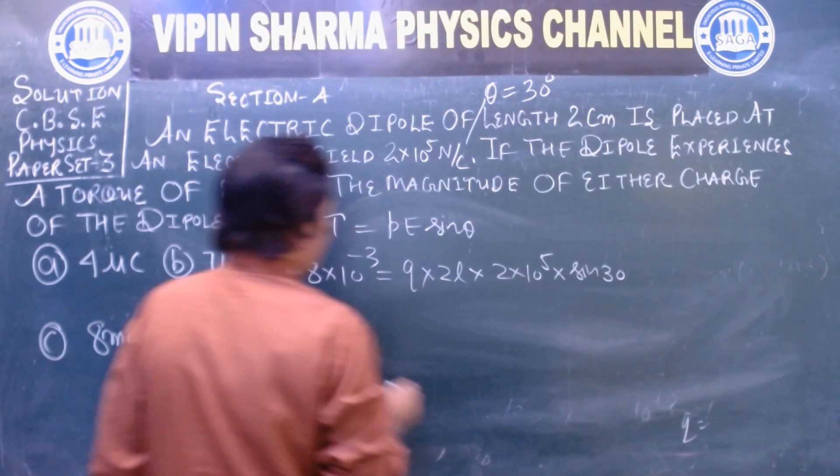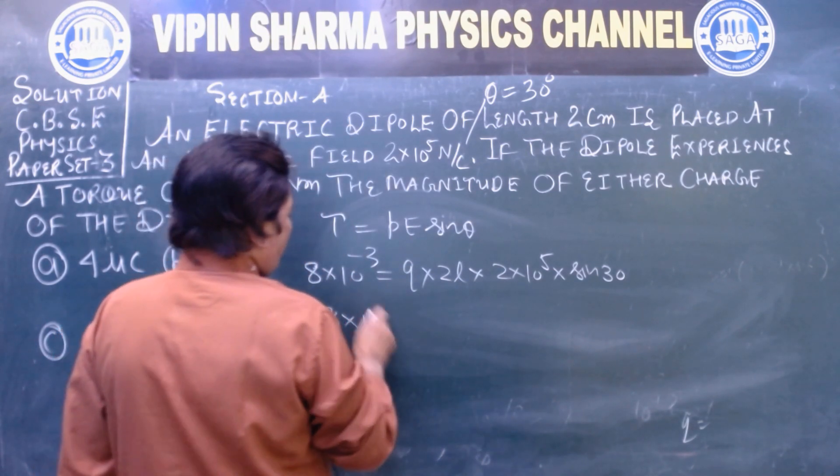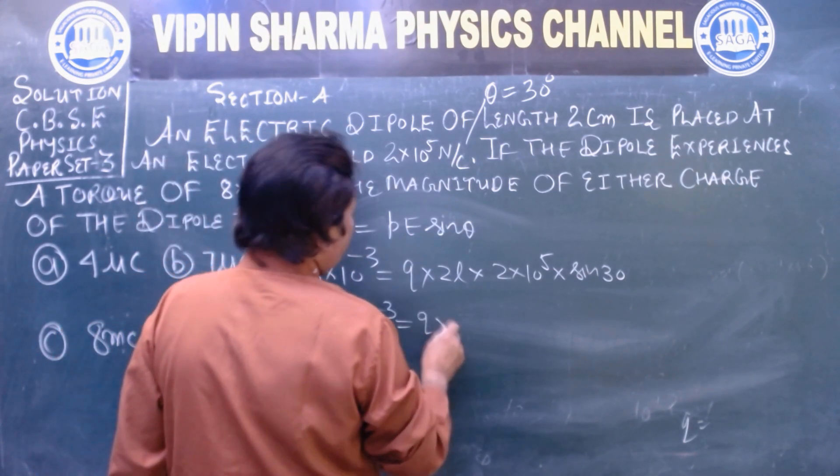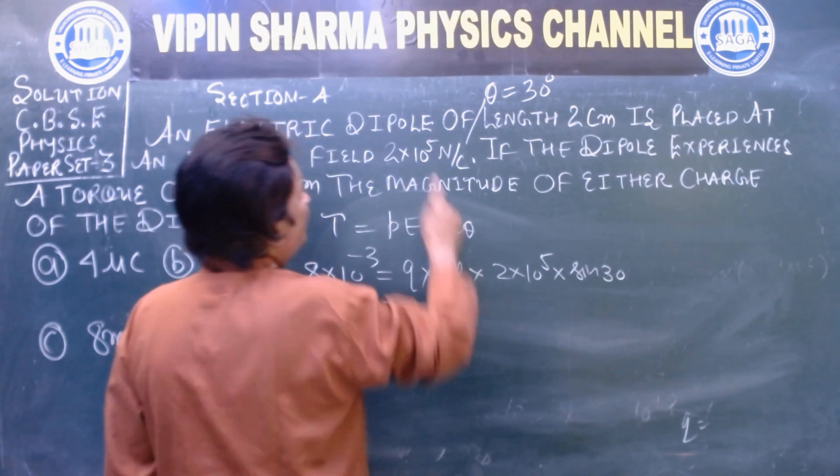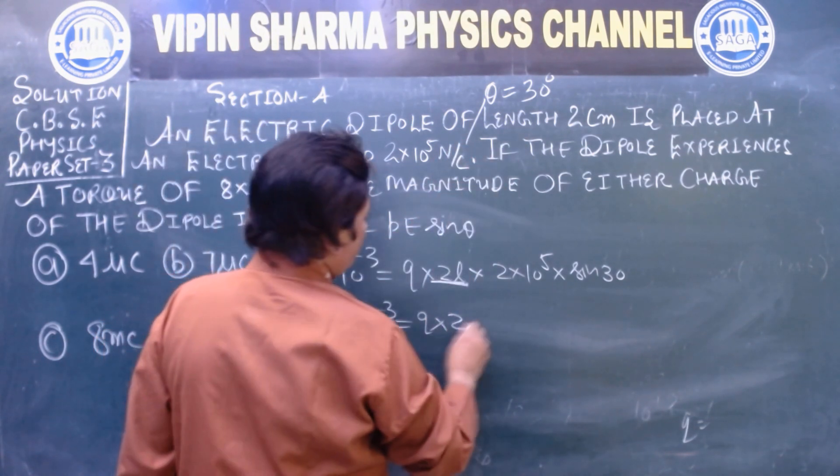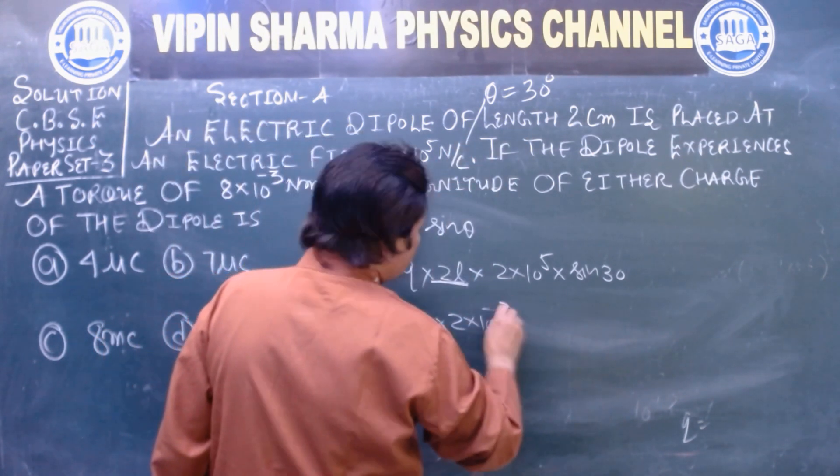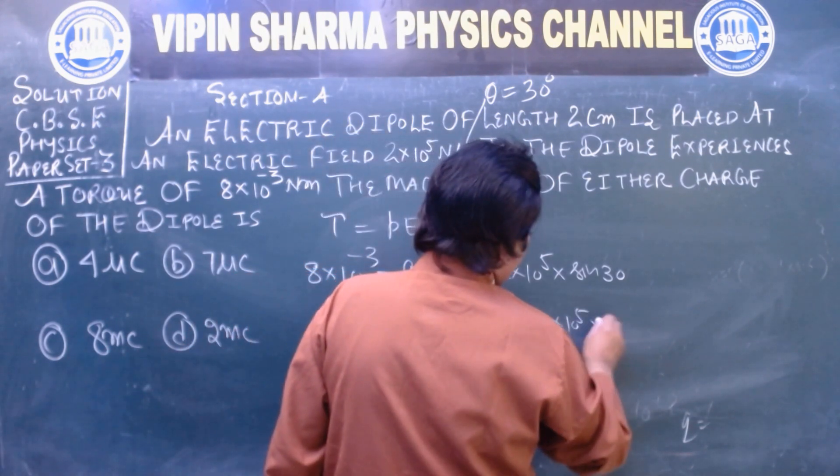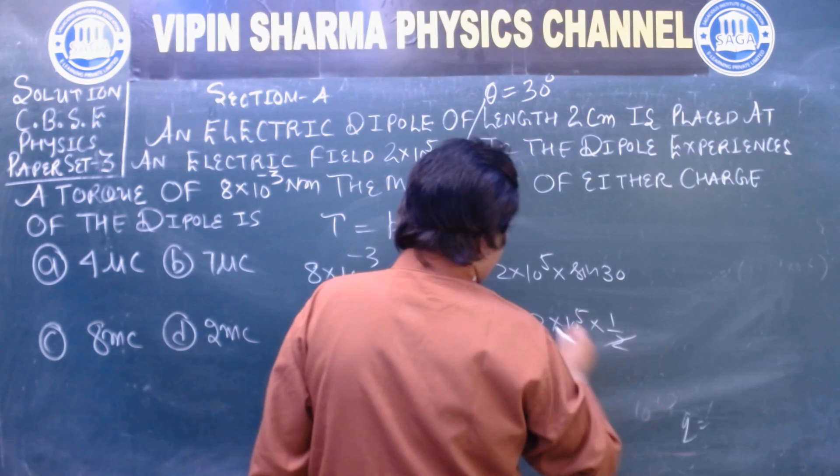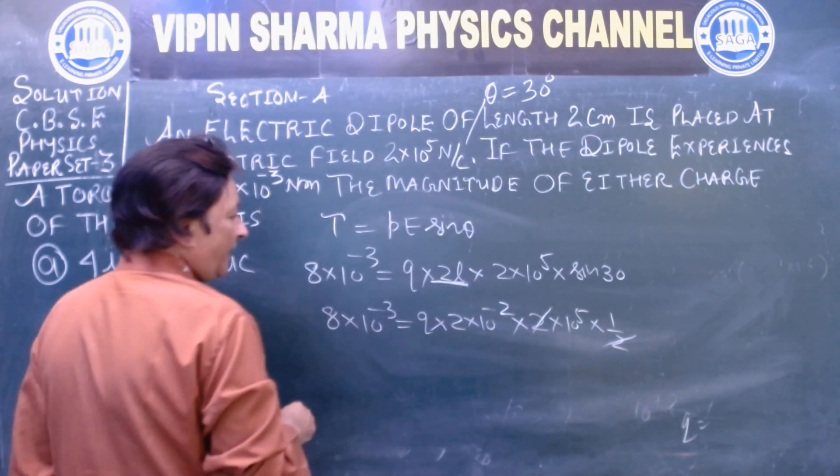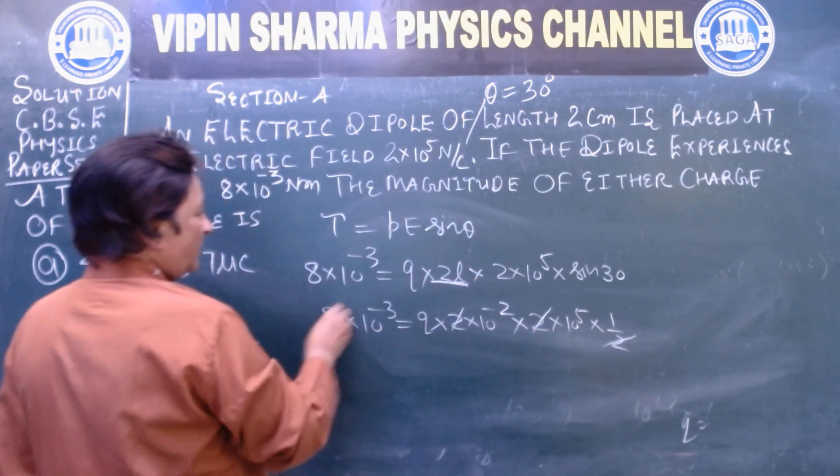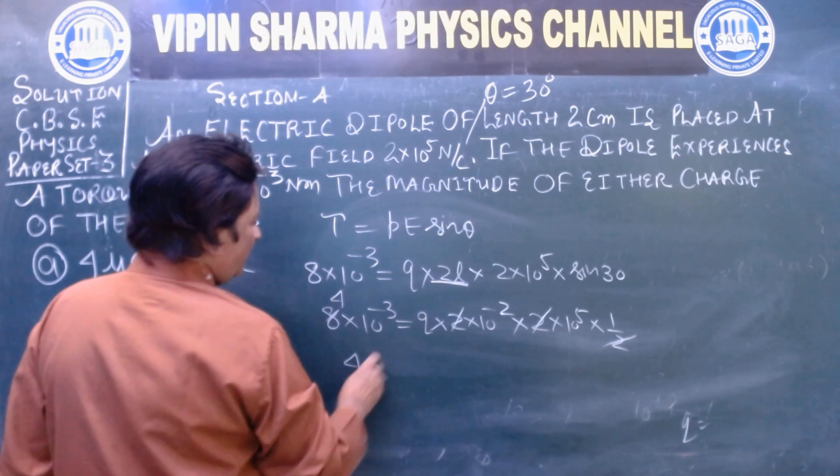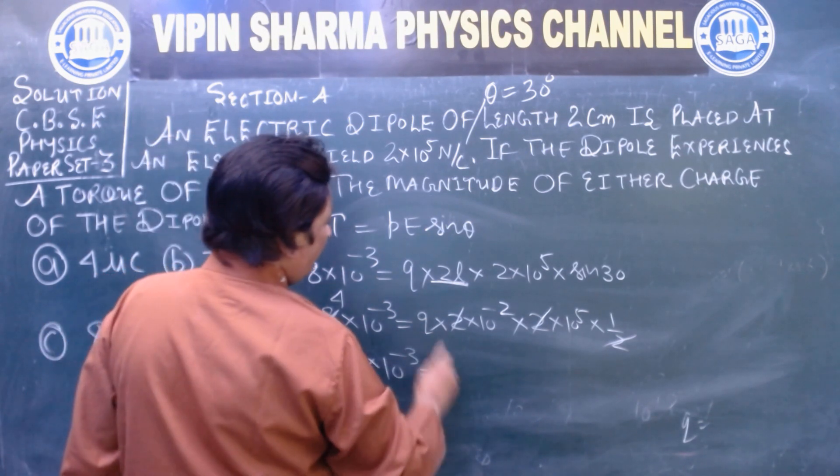8 × 10^-3 equals Q. What is 2L? 2L is 2 cm, that is 2 × 10^-2 meter into 2 × 10^5. So this gets cancelled. Sine 30 is 1 upon 2, this gets cancelled. Sine 30 half, then 2 with this 4. 4 × 10^-3 Q.